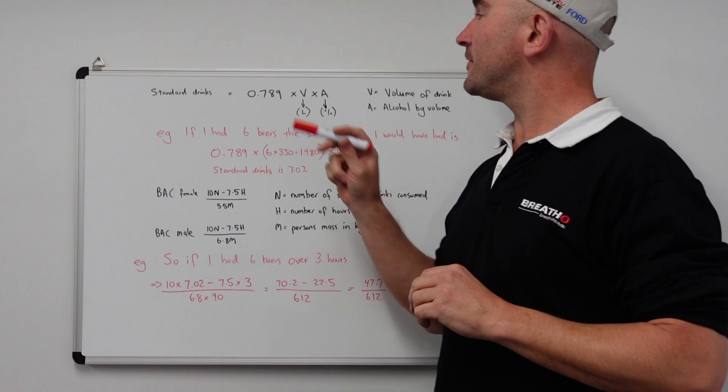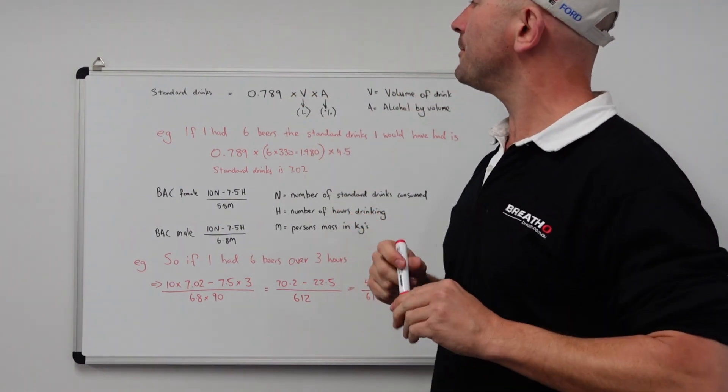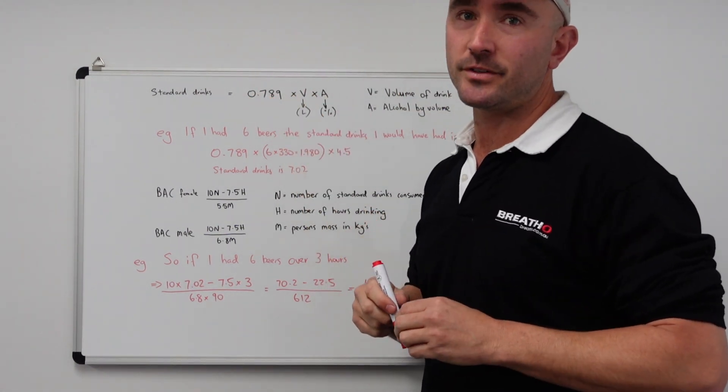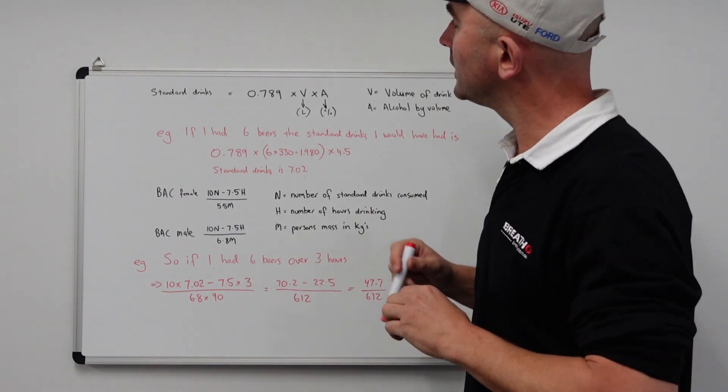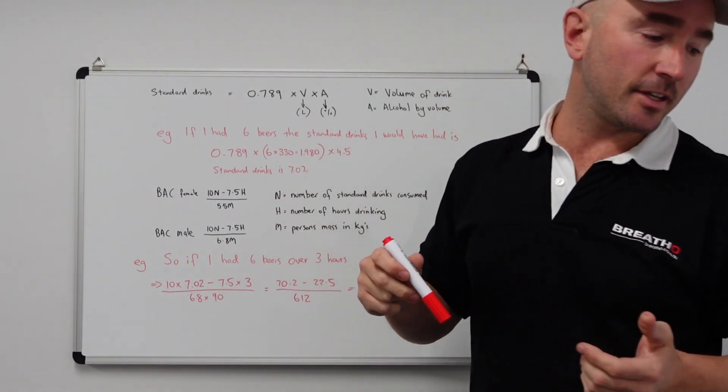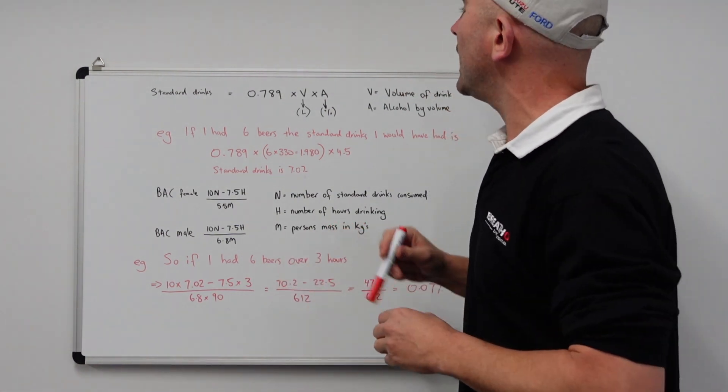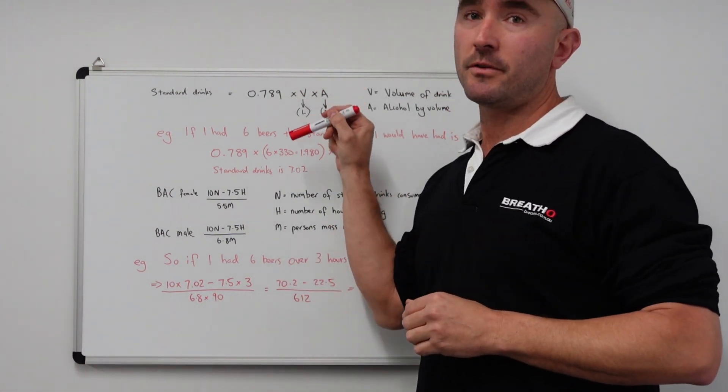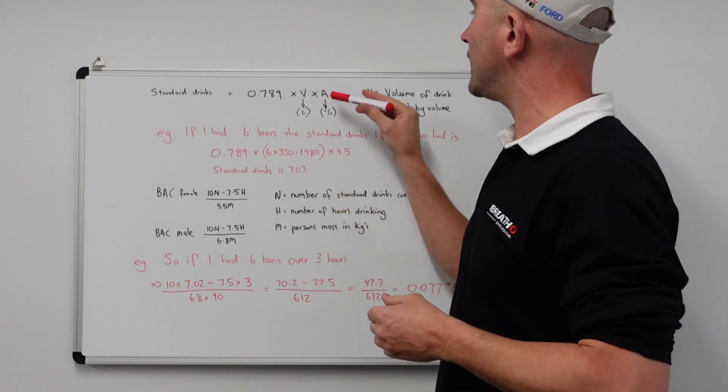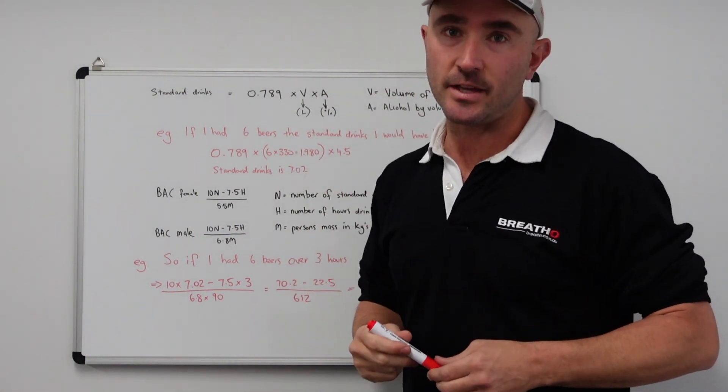So here's the first calculation that we need to work out. This number here, 0.789, which is a fancy number that they worked out I think is something to do with the density of alcohol at room temperature, times V, which is the volume of alcohol that you've had, times A, which is the percentage of the alcohol that you've had.